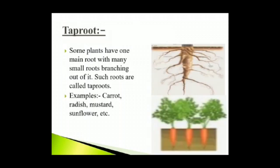Tap root: Some plants have one main root with many small roots branching out of it. Such roots are called tap roots. The main root grows vertically downward into the soil. It has many smaller and thinner roots called root hairs along the sides. Examples: carrot, radish, mustard, sunflower, etc.